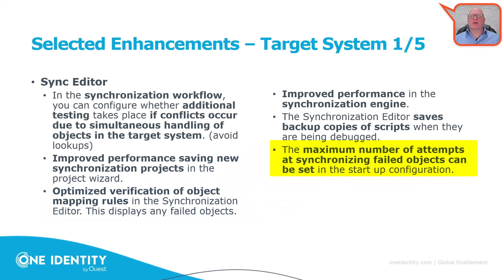When debugging scripts, the synchronization editor now allows backups, which helps if you want to revert to a previous state. Last but not least, a very interesting improvement is that the maximum number of synchronization attempts for an object can now be configured. Previously, a default configuration led to a certain number of attempts before an object was marked as failed. This amount is now configurable in the synchronization object's startup configuration project properties.